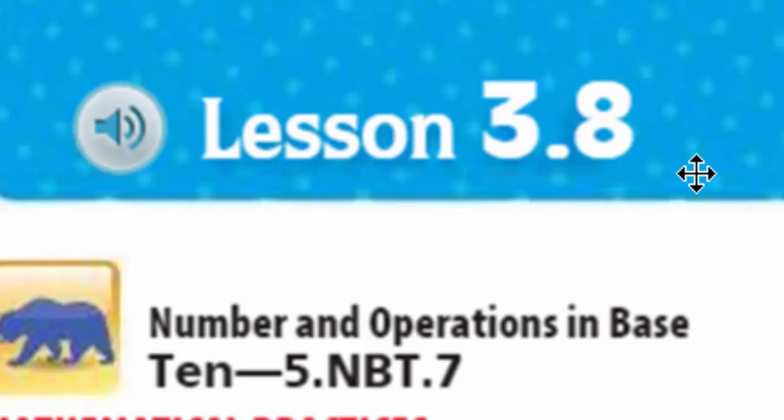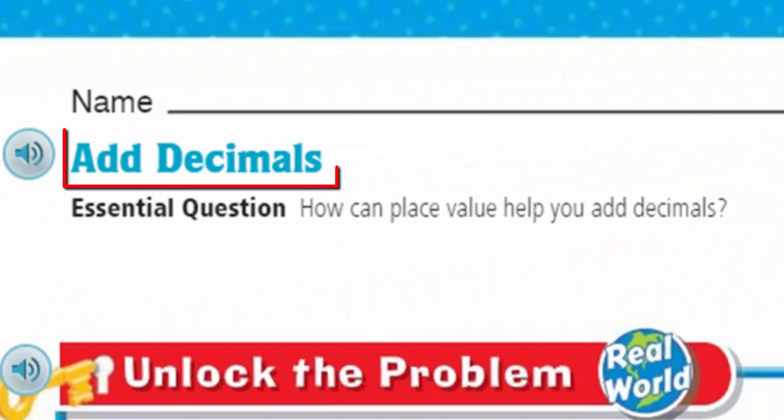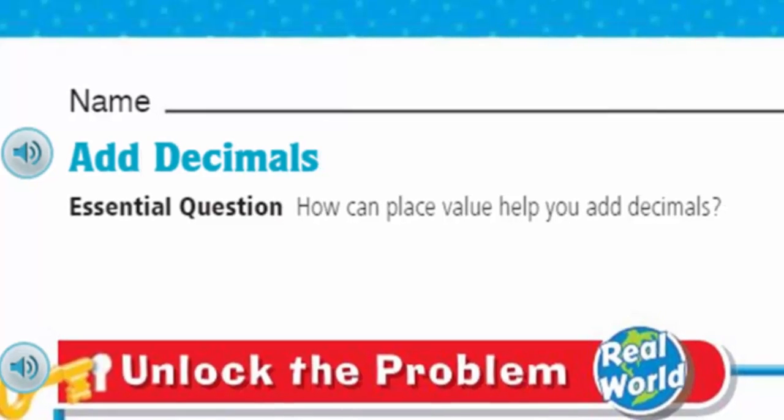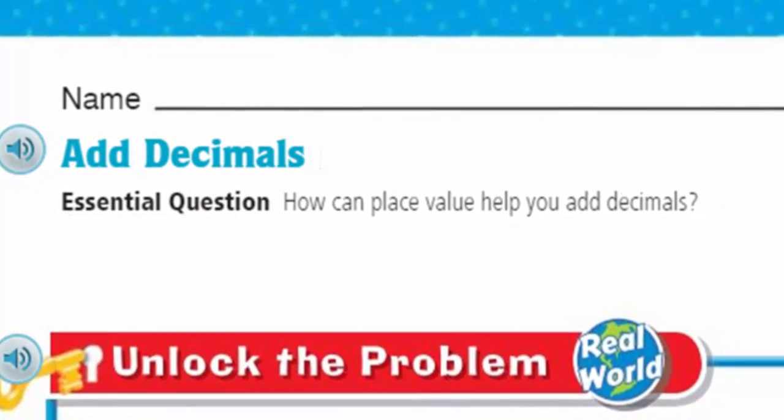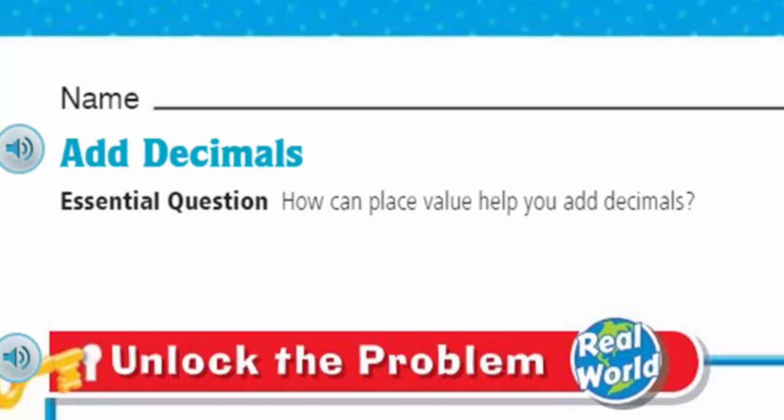Anywho, welcome. We're at lesson 3.8, and our topic today is adding decimals. Yes, and it says in our essential question: how can place value help you add decimals? Now, in previous lessons, we have done some decimal addition using models, those base 10 blocks. Now, it looks like we're going to be moving towards more of an algorithmic process. It's time to unlock the problem.